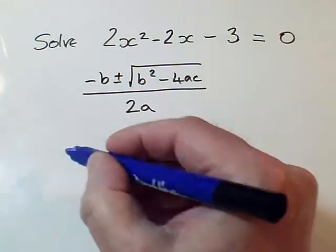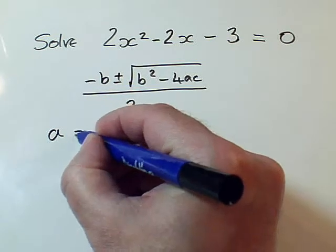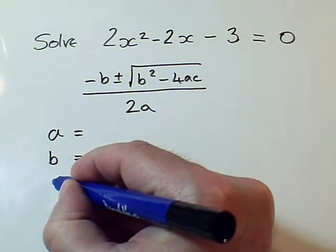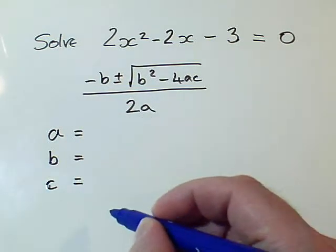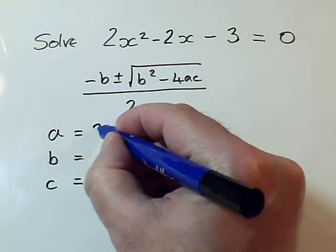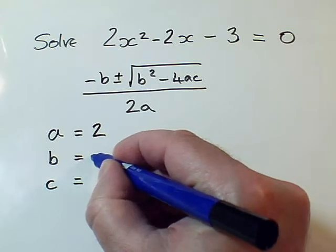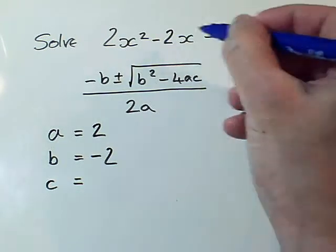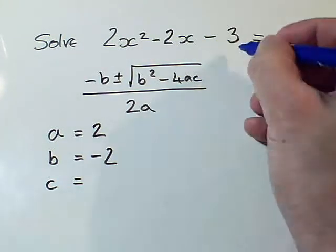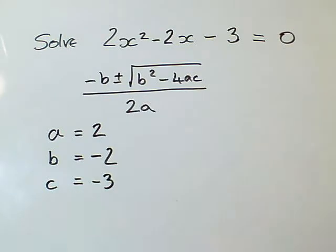When applying it, you have to set up the values of a and b and c. In this case, the number of x squared is a, which is 2. b, which is the coefficient of x, is minus 2. Remember, the minuses are attached to the values that follow them. So c is minus 3.